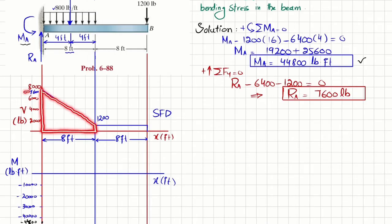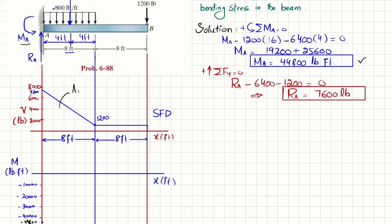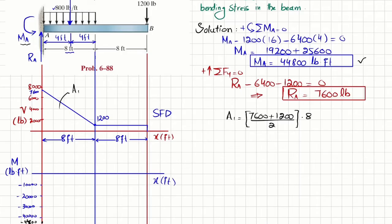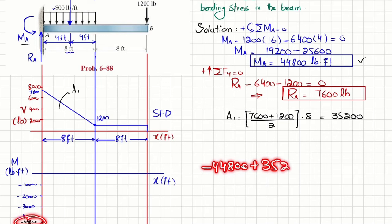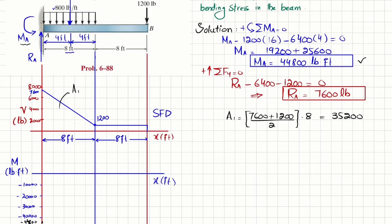The first area under the shear force diagram is a trapezoid with heights 7600 and 1200 and width 8 feet. Area A1 equals (7600 plus 1200) divided by 2, times 8, which equals 35200. The bending moment at point B is minus 44800 plus 35200, giving minus 9600 pound-feet. Since the shear force is a first-degree line with decreasing slope, the bending moment is a second-degree curve, and we join the two points with this curve.